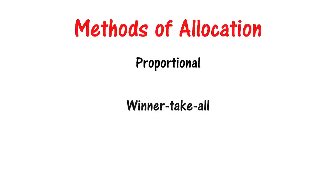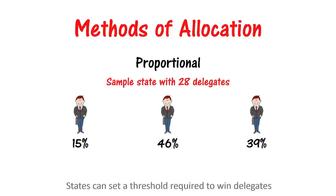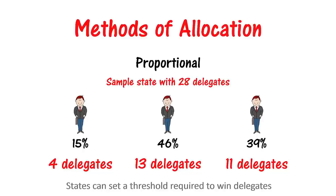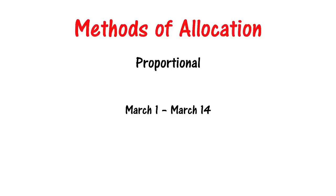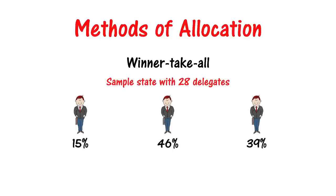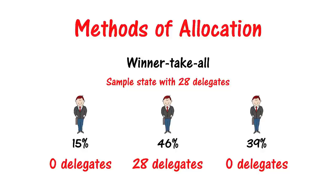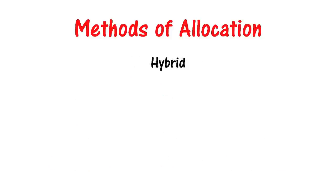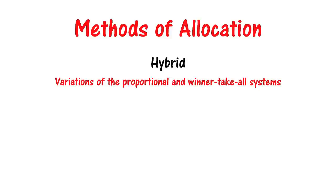To decide which candidate or candidates wins delegates, states can decide to use a proportional system, a winner-take-all system, or a hybrid system. In a proportional system, each candidate receives a portion of a state's delegates based on the percentage support he or she receives in the state's primary election, caucuses, or convention. States that hold primaries from March 1st through 14th must allocate their delegates with this type of system. In a winner-take-all system, the candidate who receives the most votes wins all the delegates. There are numerous hybrid systems that include variations of the proportional and winner-take-all systems.